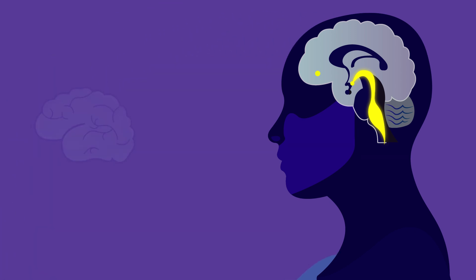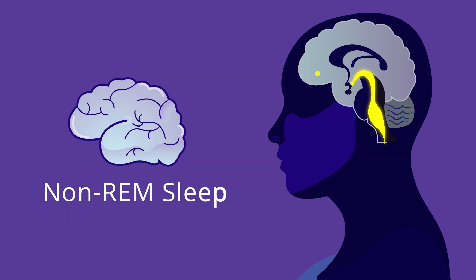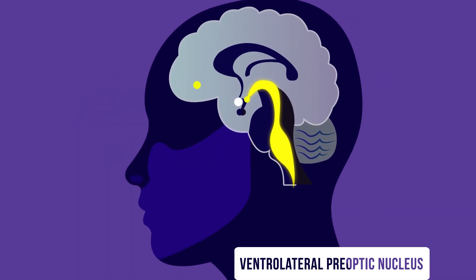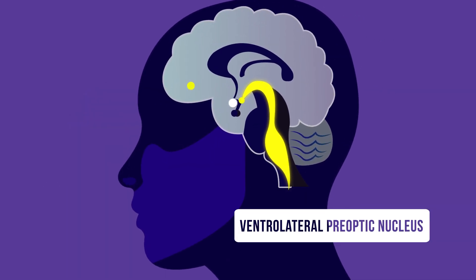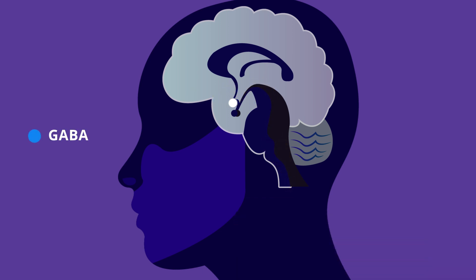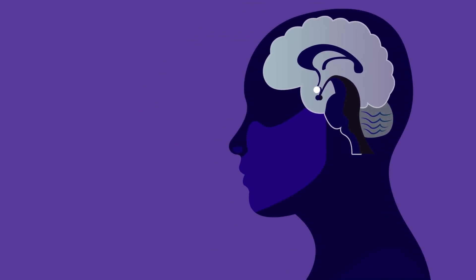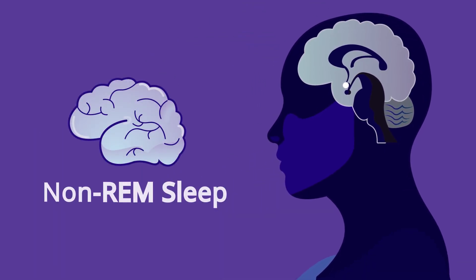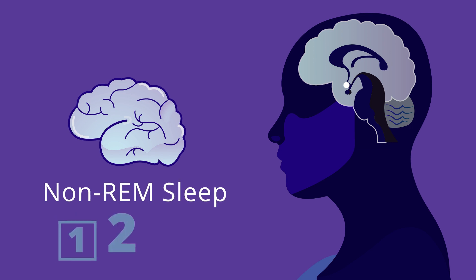The second phase is non-REM sleep. In this stage, the sleep center — which is primarily the ventrolateral preoptic nucleus, or VLPO, in the hypothalamus — secretes GABA and shuts down the ascending reticular formation. As a result, your brain's higher centers shut down and all your vivid experiences are halted. That means you don't dream during non-REM sleep. There are three stages in non-REM sleep. While the body gradually drifts through these three stages, your sleep gets deeper and your breathing becomes more rhythmic.